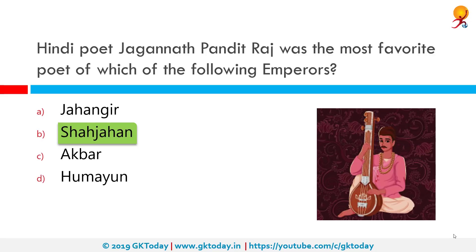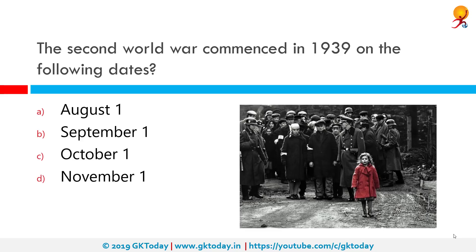The Second World War commenced in 1939 on which of the following dates? The correct answer is September 1st. World War II, also known as the Second World War, was a global war that lasted from 1939 to 1945. The vast majority of the world's countries, including all the great powers, eventually formed two opposing military alliances — the Allies and the Axis. The Allied powers won against the Axis powers.